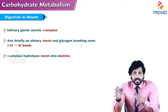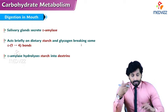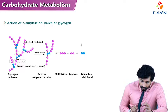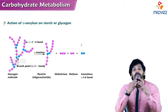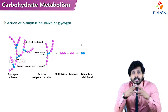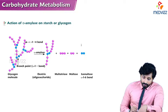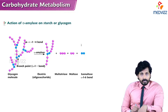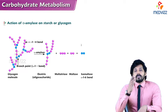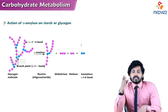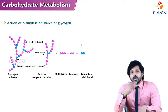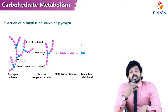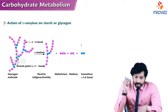In the diagrammatic representation shown, the purple and blue colors indicate different linkages — the blue dots indicate branching, representing alpha-1-6 glycosidic linkages. Alpha-amylase acts on the alpha-1-4 glycosidic bonds and produces shorter fragments: maltotriose (three glucose units), maltose (two glucose units), and isomaltose, which consists of two glucose units joined by alpha-1-6 glycosidic linkage.